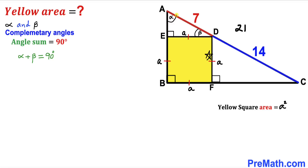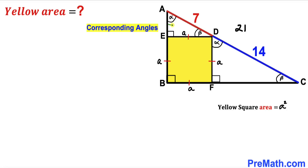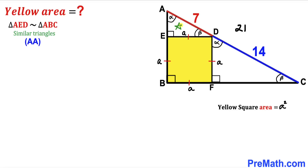Focusing on the big right triangle ABC: one angle is alpha, one is 90 degrees, so the remaining angle is beta. The angle alpha in triangle AED and angle alpha in triangle ABC are corresponding angles, and similarly for beta. These angles are congruent, so triangle AED is similar to triangle ABC by the angle-angle similarity theorem.